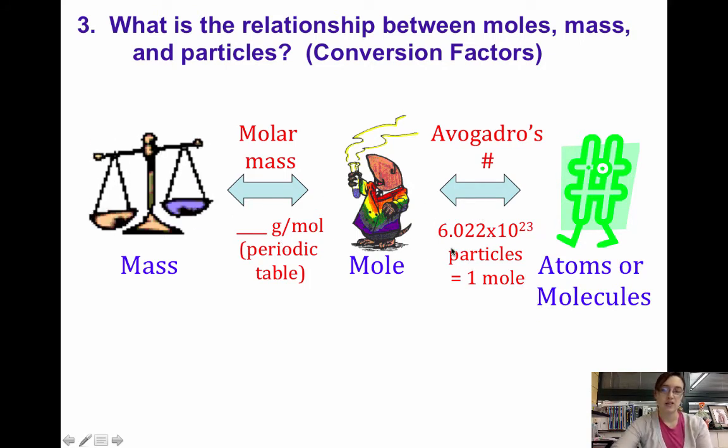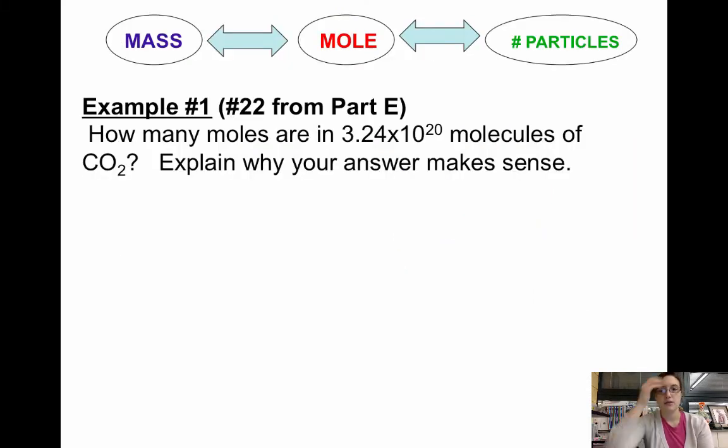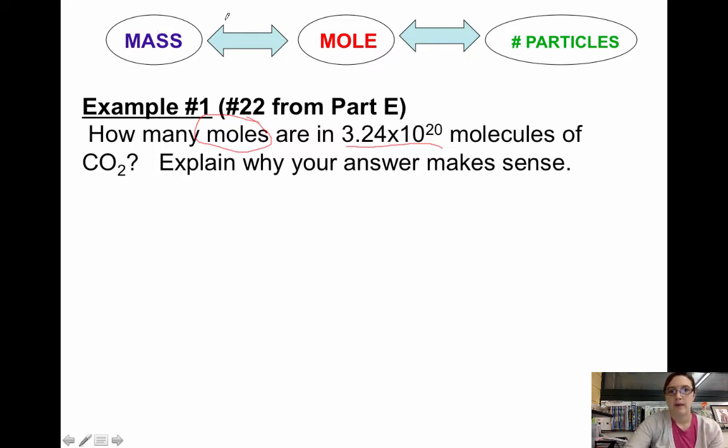So we'll take a look at a few examples that you have. The first example is actually number 22 in Part E, and it says how many moles are in 3.24 times 10 to the 20th molecules of CO2. So like always, underline your numbers that you have so that way you can figure out what you're given and what you're trying to go to. So we're given molecules, we're trying to go to moles. So up here you have the mass to moles to particles like I showed you on the last slide. So we are starting with molecules. Atoms and molecules is your number of particles. So remember if you're over here, we use Avogadro's number to get to moles.